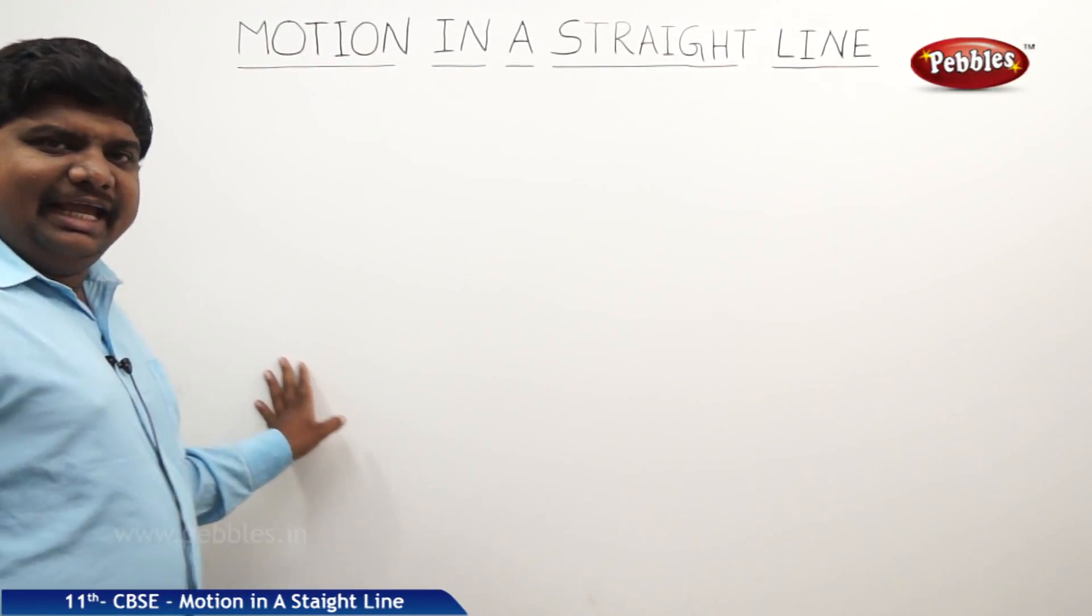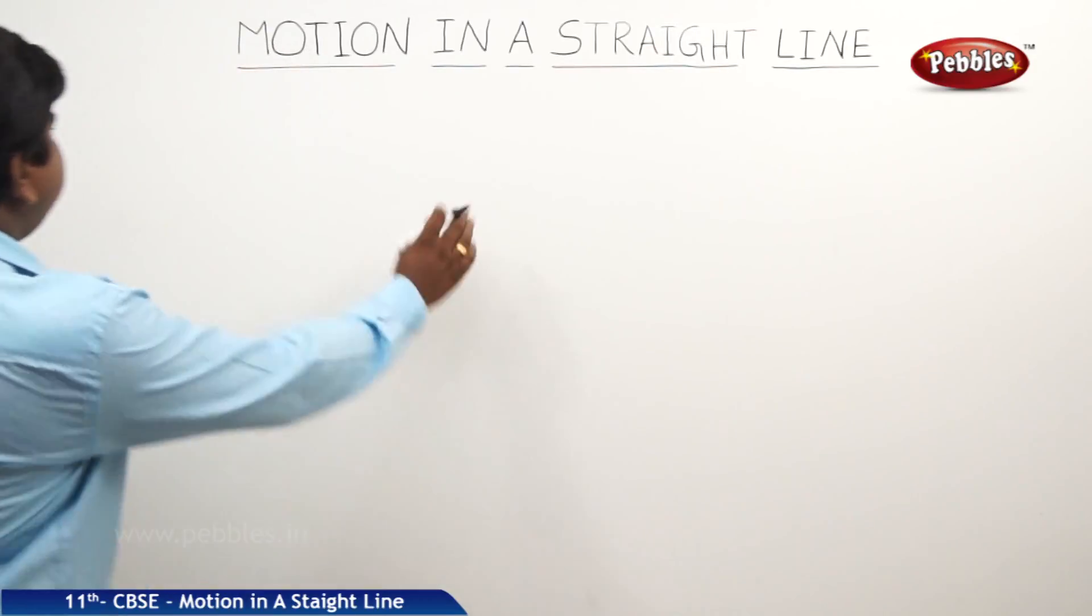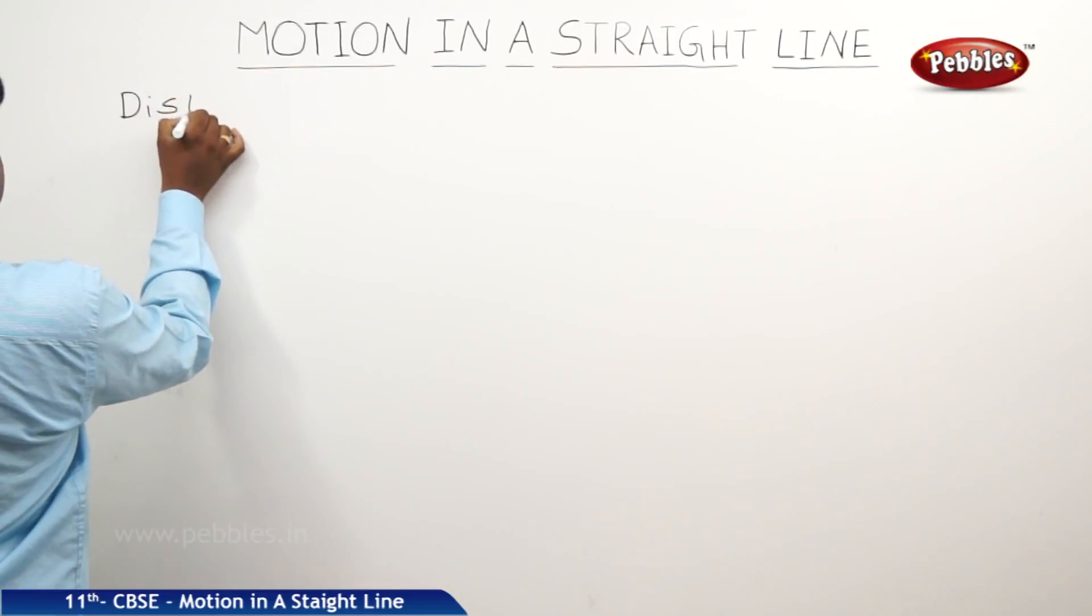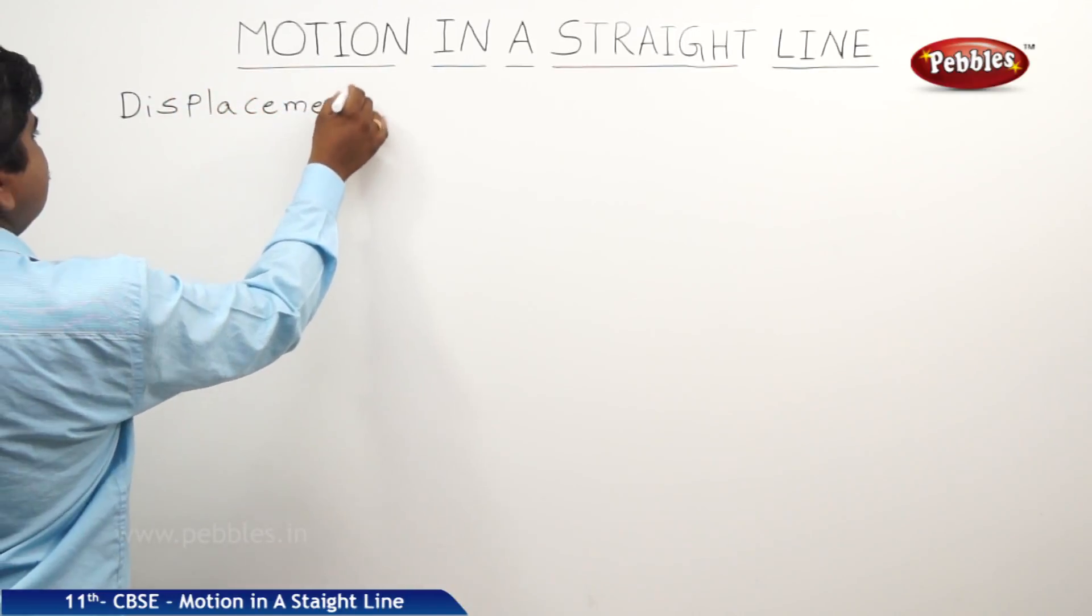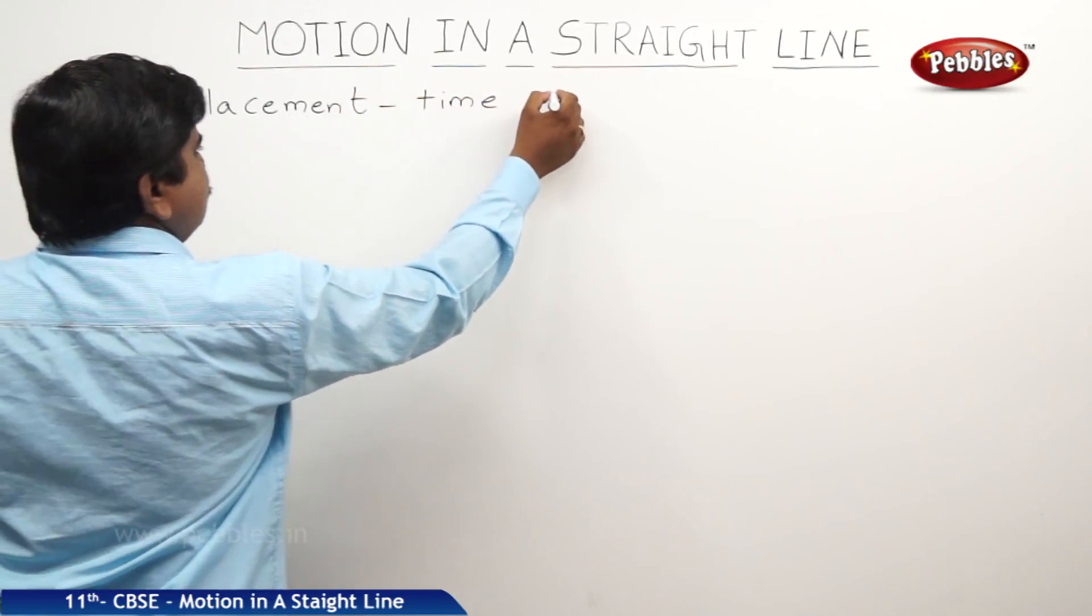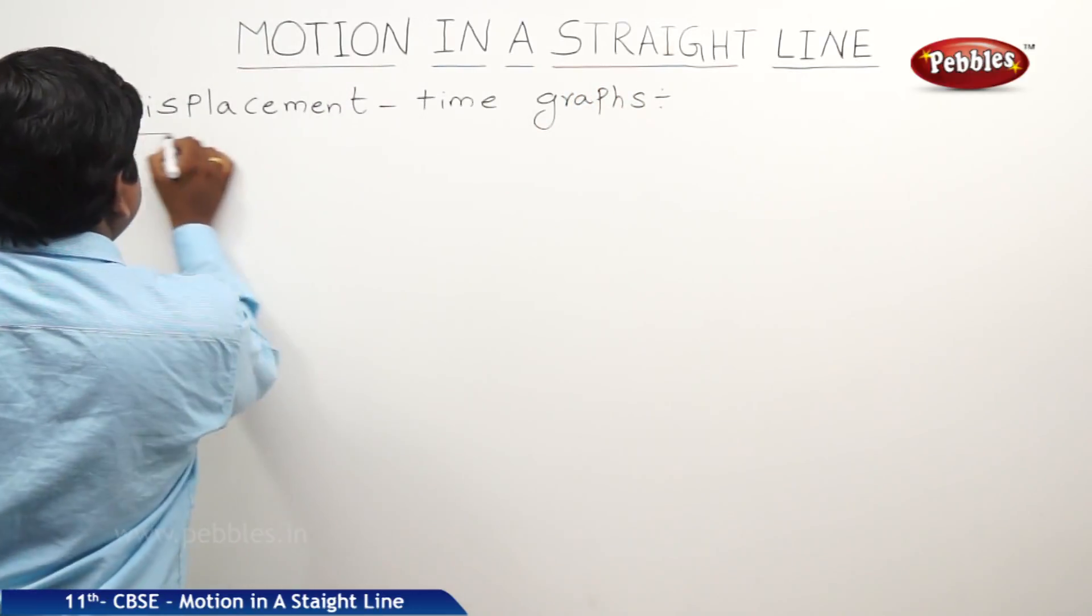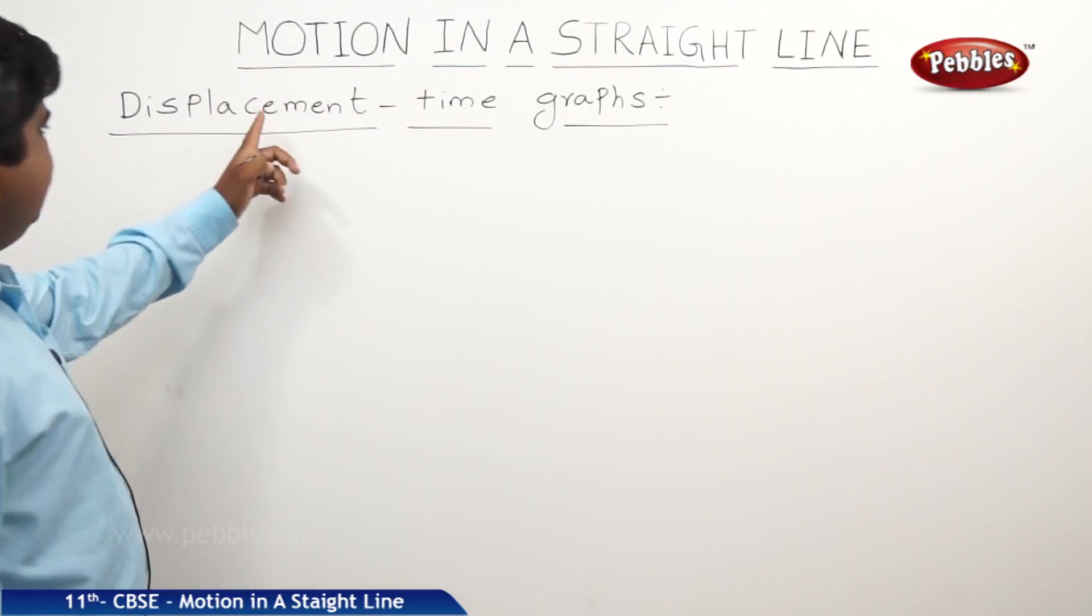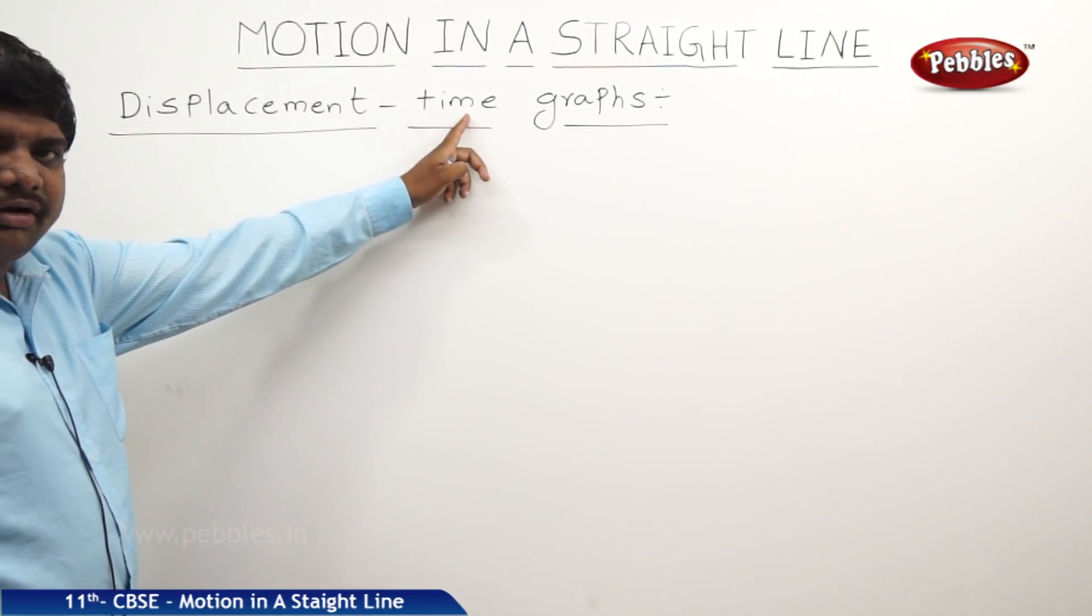Now we will see the nature and shape of the graphs. We will see the displacement time graphs first. As we know that displacement should be taken on y axis, time should be taken on x axis.